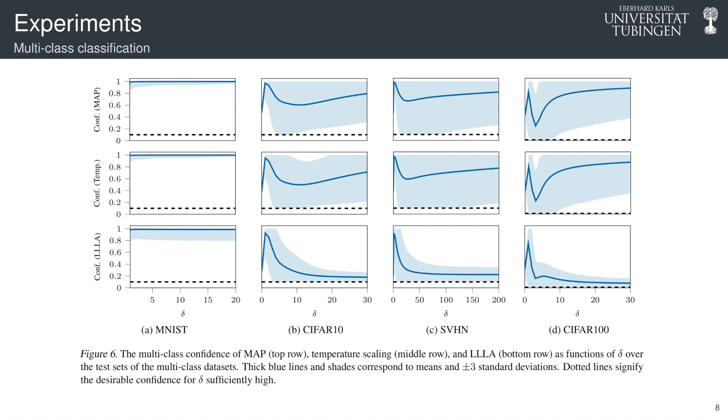However, on MNIST, we show that our last layer approximation does not really help. This is maybe because of several factors, like the network architecture and loss landscape and optimization process,